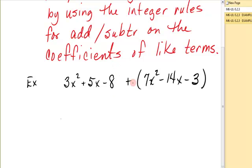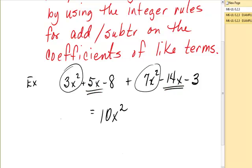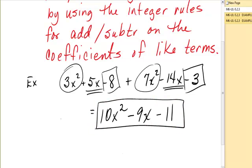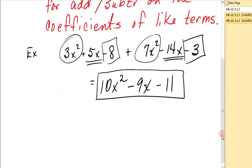So now I am just going to be adding using the addition rules for like terms. I have 3x² and 7x², which add together for 10x². I have 5x and -14x. One positive, one negative. I subtract, keep the sign of the bigger one, which is -9x. Then finally, I have -8 and -3. They're both negative. Add them up, keep it negative, for -11. I have added those polynomials by adding the like terms coefficients.